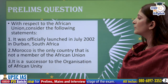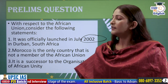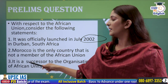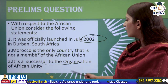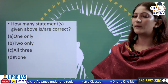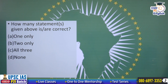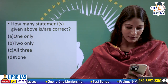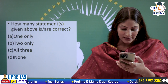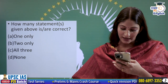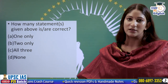Now let's look at the prelims question. With respect to the African Union, consider the following statements: It was officially launched in July 2002 in Durban, South Africa. Morocco is the only country that is not a member of the African Union, and it is a successor to the Organization of African Unity. How many of the statements given above are correct? Answer this and I will take your names in the next class. From the last question on Pashtunistan, Kushal, Mohammed Sahil, Simran, and Rashmit answered it correctly. Thank you so much. You all also have to answer this question.